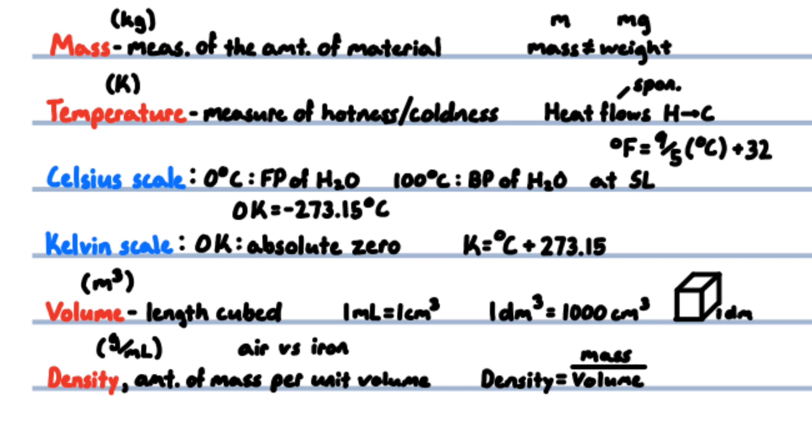Kelvin scale was defined as absolute zero being zero kelvin. Absolute zero is the lowest possible temperature, theoretically cannot actually reach absolute zero. Zero kelvin equals negative 273.15 degrees Celsius, so kelvin equals Celsius plus 273.15. The volume of a cube is equal to the side length cubed. Standard unit is cubic meters. Sometimes for smaller measurements, cubic centimeters is used. One cubic centimeter equals one milliliter.